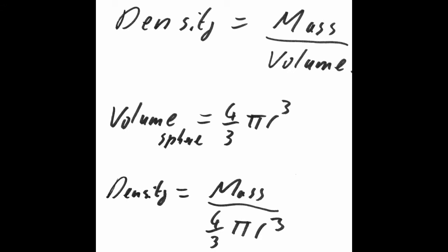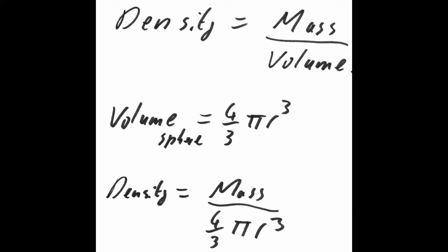The mass of a nucleus can be given as density times 4 thirds pi r squared. We know that the radius of the nucleus is cube root of the nuclear number, number of protons and neutrons in a nucleus, times the radius of a proton.